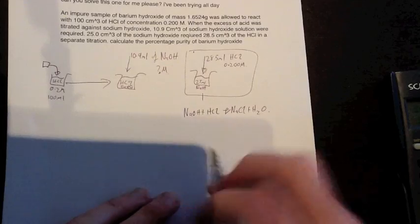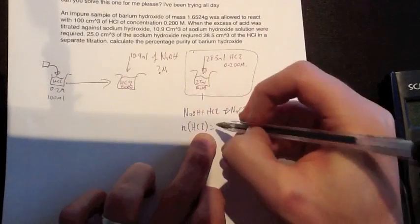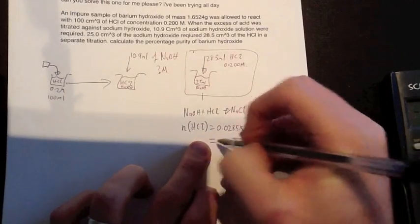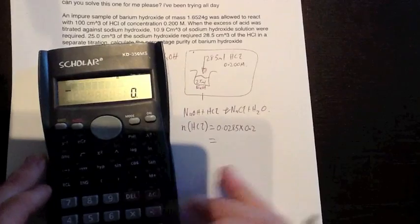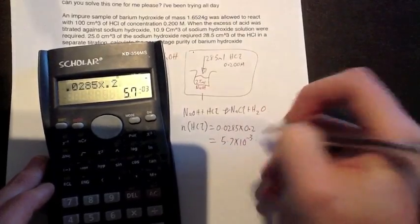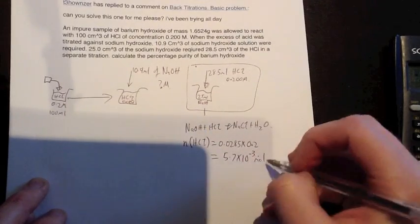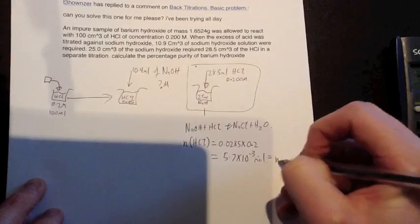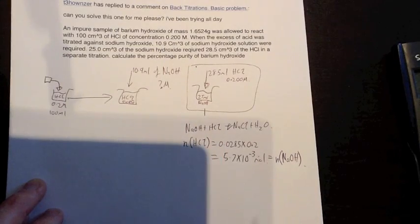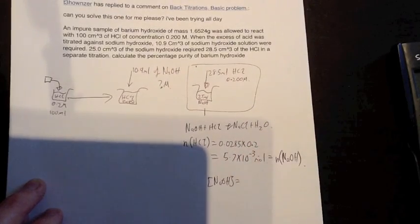So we can find out number of moles of hydrochloric acid equals 0.0285 times 0.2 equals 5.7 times 10 to the power of negative 3. And that's mole of that. So that means we have, that will be equal to the number of moles of NaOH because our reaction is 1 to 1, means for every 1 mole of this we have 1 mole of that reacting.